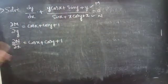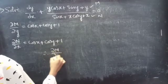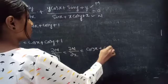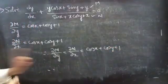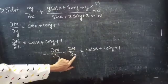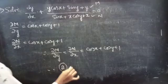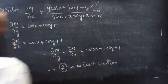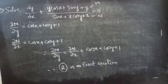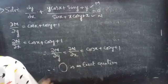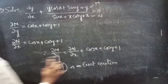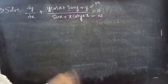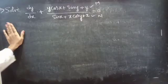Here ∂M/∂y equals ∂N/∂x — both equal cos(x) + cos(y) + 1. Since the partial derivative of M with respect to y equals the partial derivative of N with respect to x, we can confirm that equation 2, or equivalently equation 1, is an exact equation.